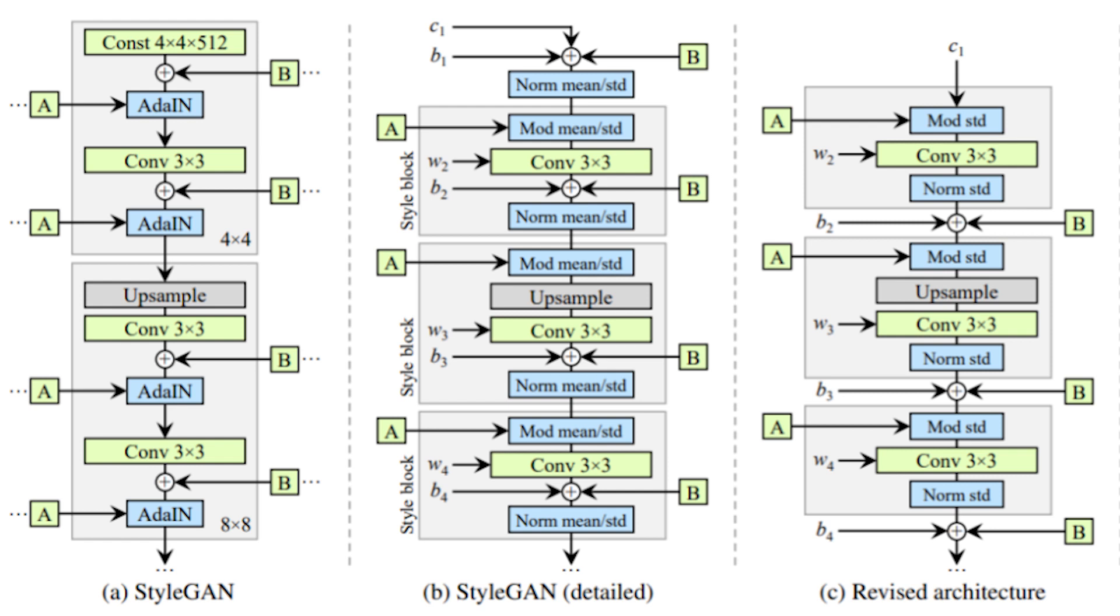The original StyleGAN would demodulate then modulate feature maps immediately. The authors revisited this. They define a style block as any operations done between modulation and demodulation. This is where feature maps are changed using convolution and the modulation of them applies certain features more than others.